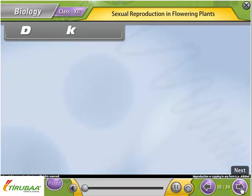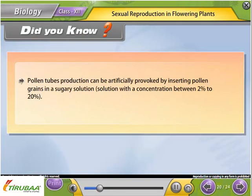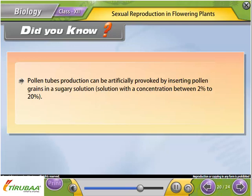Did you know? Pollen tube production can be artificially provoked by inserting pollen grains in a sugary solution with a concentration between 2% and 20%.